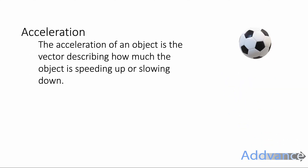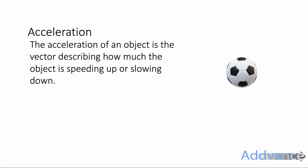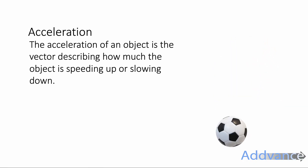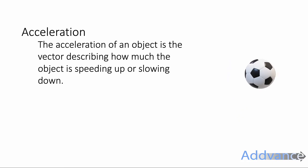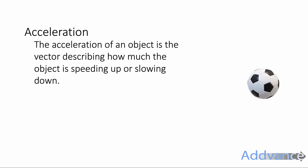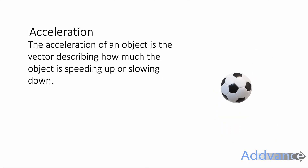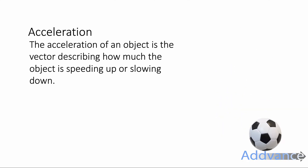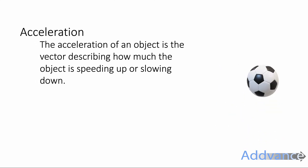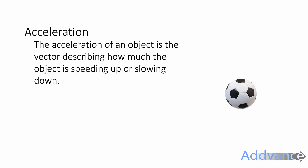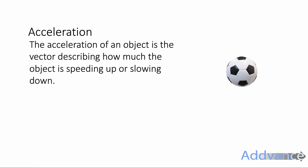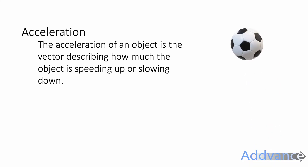Finally, we've also got the acceleration of an object. The acceleration is the vector describing how much the object is speeding up or slowing down. If the acceleration is positive it means it's speeding up; if the acceleration is negative it means it's slowing down. At each point in time the acceleration might be changing, and acceleration is a vector because it does have a direction.